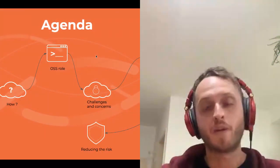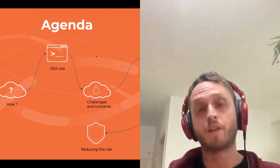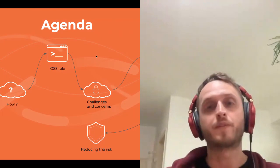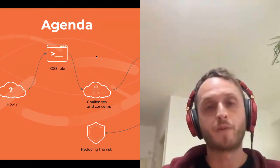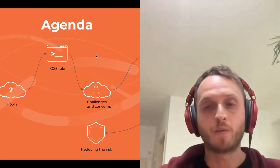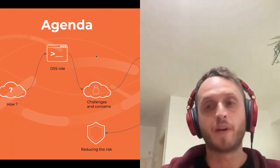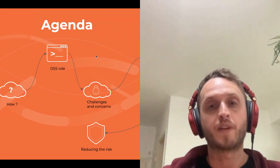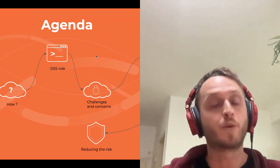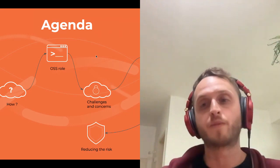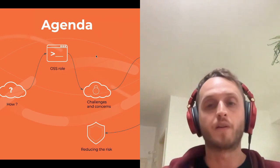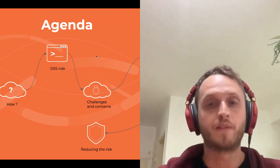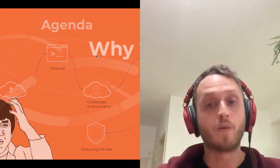Our agenda for today: first, we'll go at a high level on why organizations are shifting their applications to the cloud and how they're doing it. What is the role of open source software in helping them achieve this goal? We'll also look at some challenges and concerns organizations may have. I'll show you vulnerabilities observed in the cloud native open source world and examples of how those vulnerabilities can be used to attack applications running in the cloud. We'll also talk about how to reduce risk and mitigate against these attacks early in the development lifecycle.